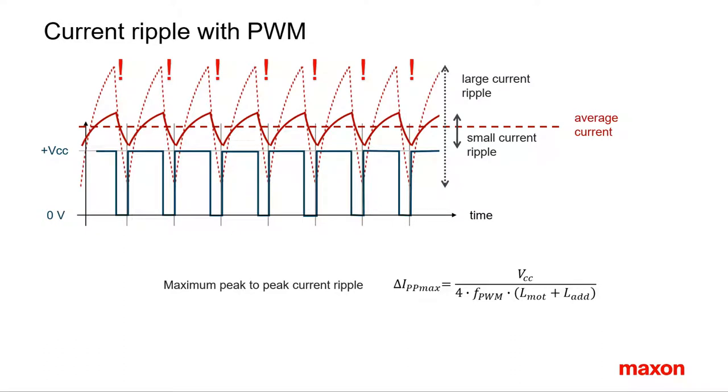The maximum torque ripple can be approximated with this formula. The formula is easy to understand and hence the measures to be taken for reducing the amplitude of the ripple as well. For example, reduce the supply voltage. This reduces the maximum current increase within each PWM cycle. Allow less time for the current to react. This means increase the PWM frequency. Enhance the electrical time constant to dampen the current response. Place an additional inductance in the motor circuit.